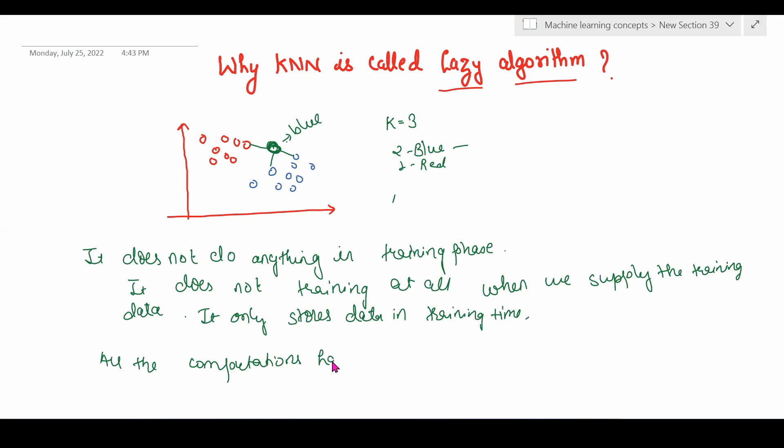All computations happen during scoring, that is when we apply the model on unseen data. This is the reason why KNN is called the lazy algorithm.